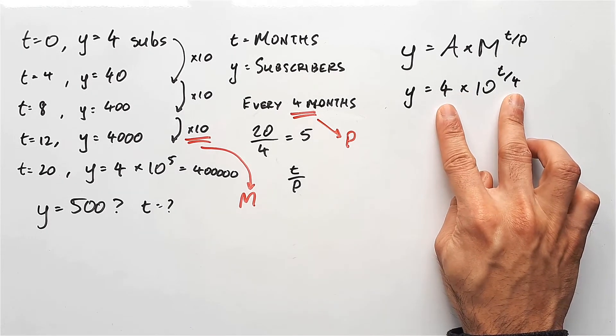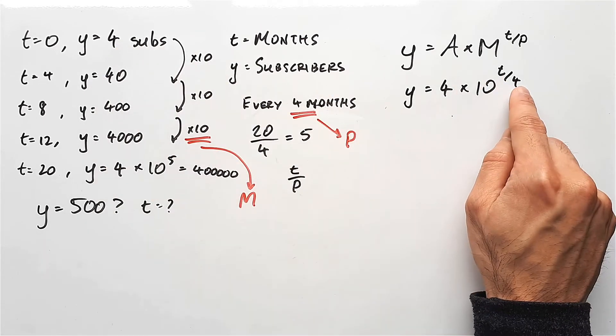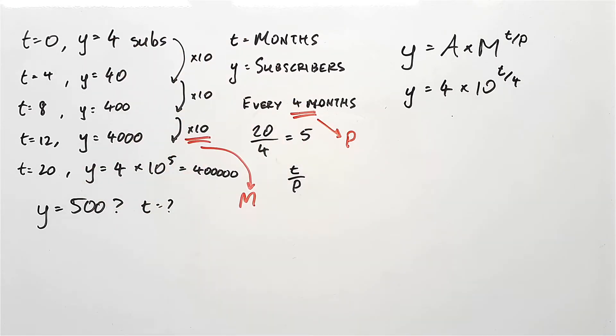And just take note that these two fours are not the same thing. This four came from however many we started with. While this four is based on how long it takes before we see a 10 times change, which is every four months.